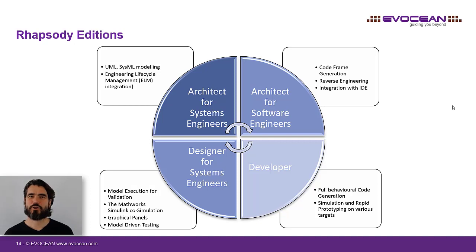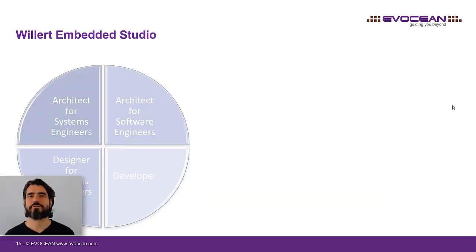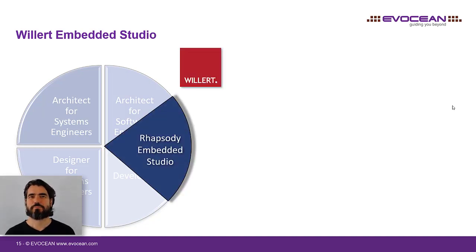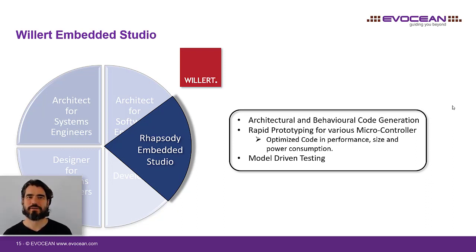If your focus is on the development of software for small microcontrollers with or without an operating system, there is another Rhapsody version worth mentioning. It's a special Rhapsody edition provided by Willard Software Tools, called Willard Embedded UML Studio. This version is based on the low-budget Rhapsody Software Architect but with extended functionality to generate full behavioral production code for small real-time targets. So when building embedded applications on small resource-limited microcontrollers, this version might be the best fit for you.